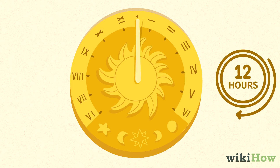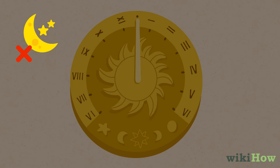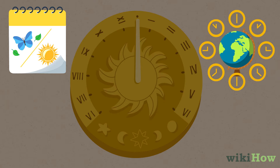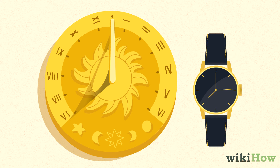Sundials typically only have 12 hours on them — the 12 daylight hours — since they can't be used at night. Keep in mind that the time on a sundial doesn't change based on the time zone you're in or daylight saving time, so the time you read on a sundial could be different from the time on your watch by a significant margin.